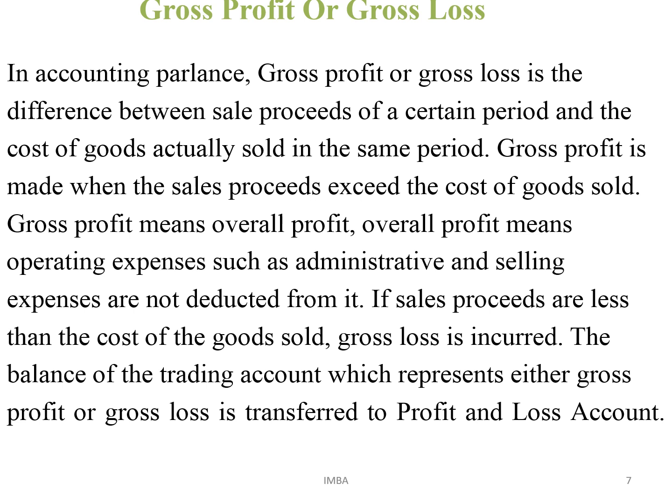Gross profit or gross loss: in trading account, we calculate gross profit or gross loss. In accounting parlance, gross profit or gross loss is the difference between sales proceeds of a certain period and the cost of goods actually sold in the same period. Gross profit is made when the sale proceeds exceed the cost of goods sold. Gross profit means overall profit — meaning operating expenses such as administrative and selling expenses are not deducted from it. If sales proceeds are less than the cost of goods sold, a gross loss is incurred. The balance of the trading account, representing either gross profit or gross loss, is transferred to the P&L account.